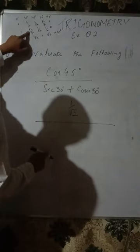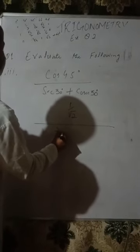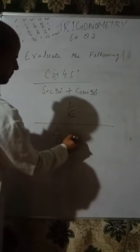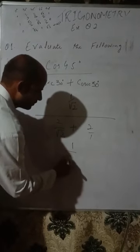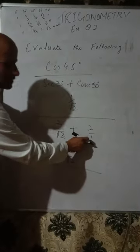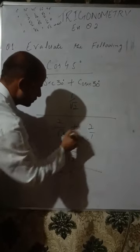Now the third part of question number 1 — this is a very important part that is frequently asked in exams. That is cos 45 degree divided by (sec 30 degree plus cosec 60 degree). Cos 45 degree equals 1/√2. Sec 30 degree is the reciprocal of cos 30, which is 2/√3. Cosec 60 degree is the reciprocal of sin 60, which is also 2/√3.